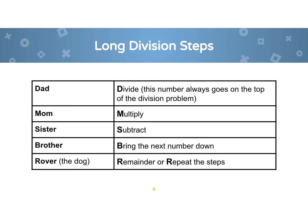And remember, here are the long division steps. First, dad, divide. This is the number that goes on top of the division problem. Multiply, mom. Subtract, sister. Bring the next number down, brother. And then rover, the dog. We're going to look to see if we need to repeat all these steps or do we have a remainder.